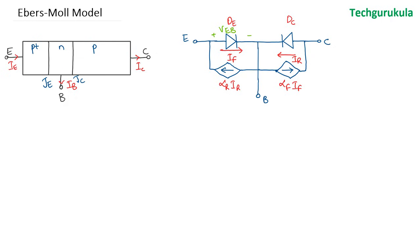Let me call the voltage across the emitter diode V_EB and across the collector diode V_CB. This model works for forward active and reverse active modes, and it is valid even for saturation and cutoff. The emitter current, collector current, and base current are marked here. This model is called the Ebers-Moll model. We started with two non-interacting PN junction diodes, and to show the interaction, we added current-dependent current sources with parameters α_F and α_R in terms of I_F and I_R.